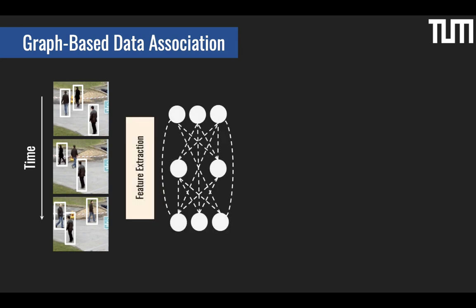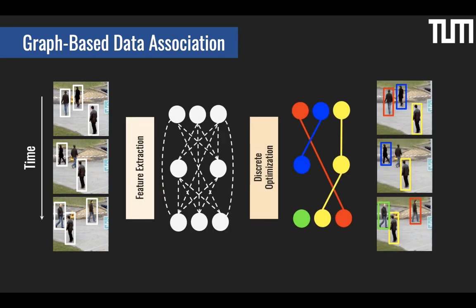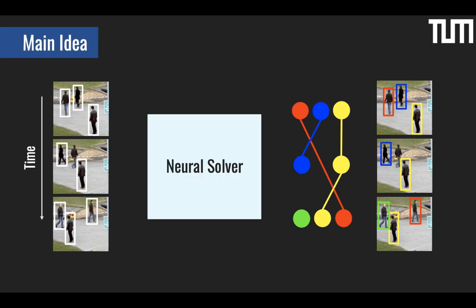Typically, different cues are first combined to define a cost for every edge, and then these are used within an optimization framework to select the edges that are part of trajectories. In this work, our main contribution is a neural network that operates on the graph domain and can both extract features and predict the final graph partition.